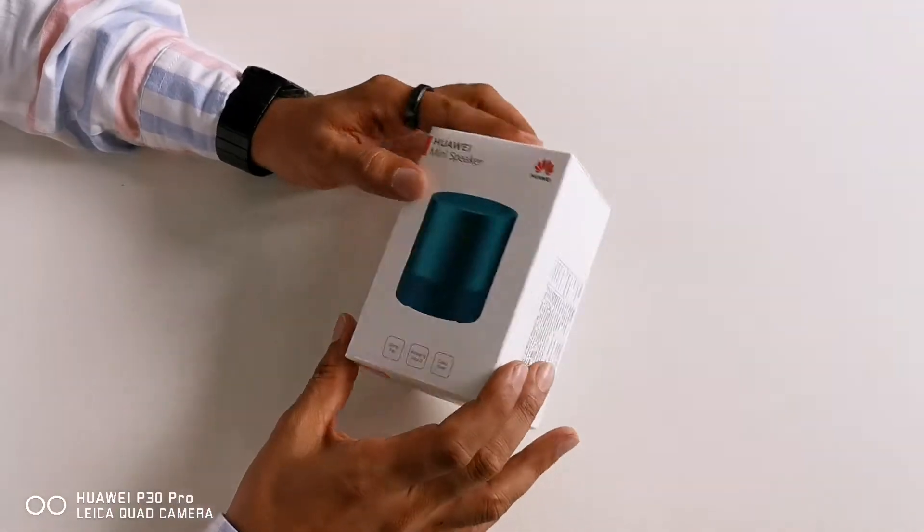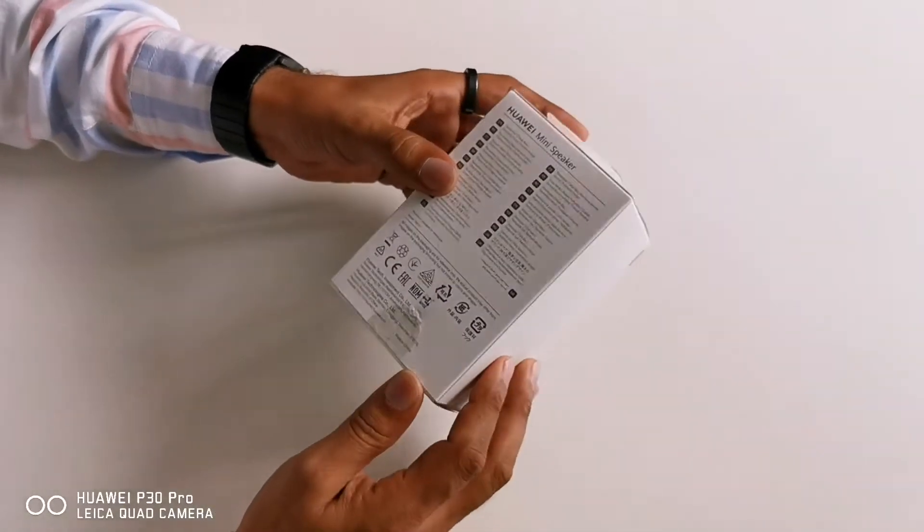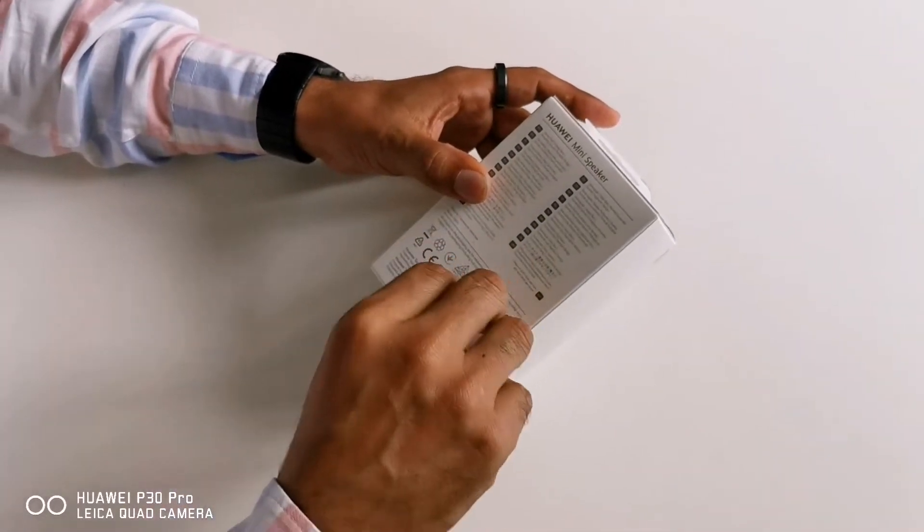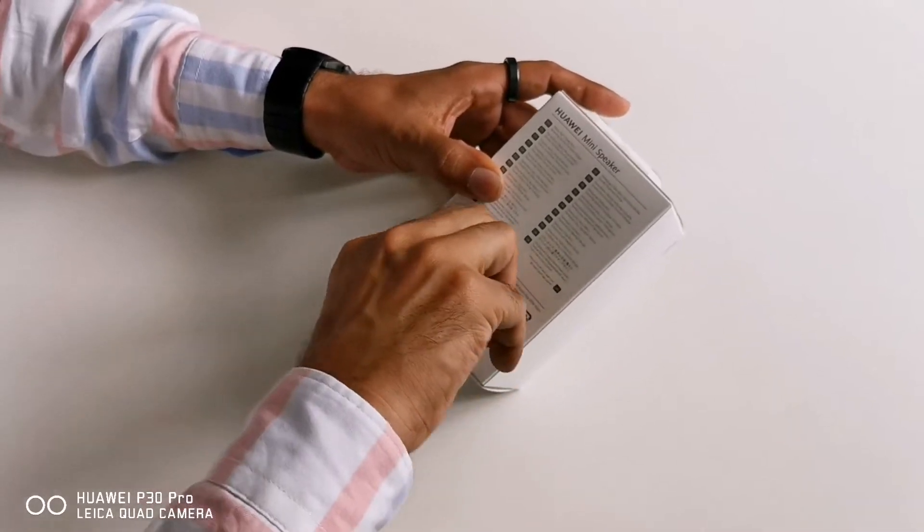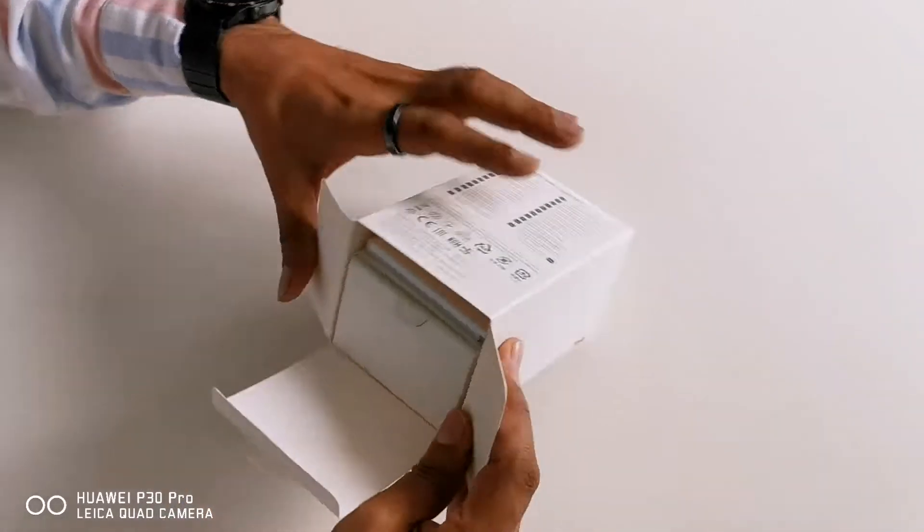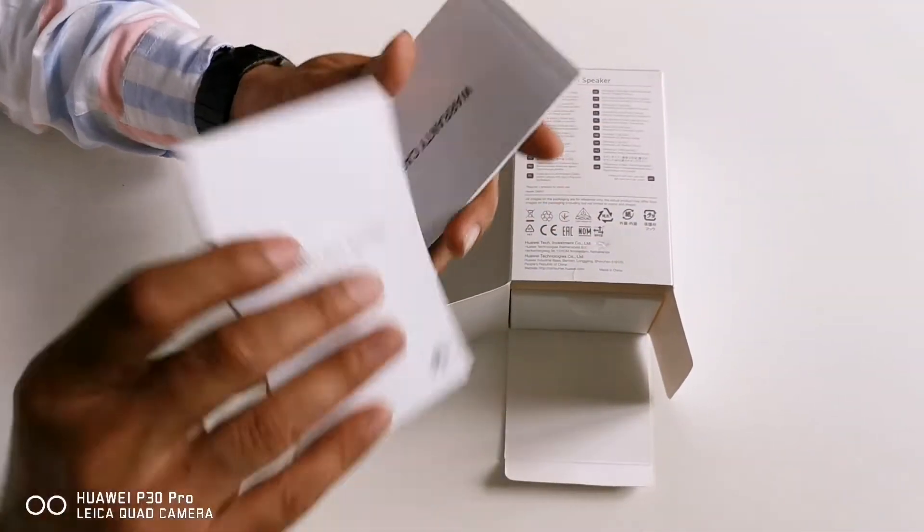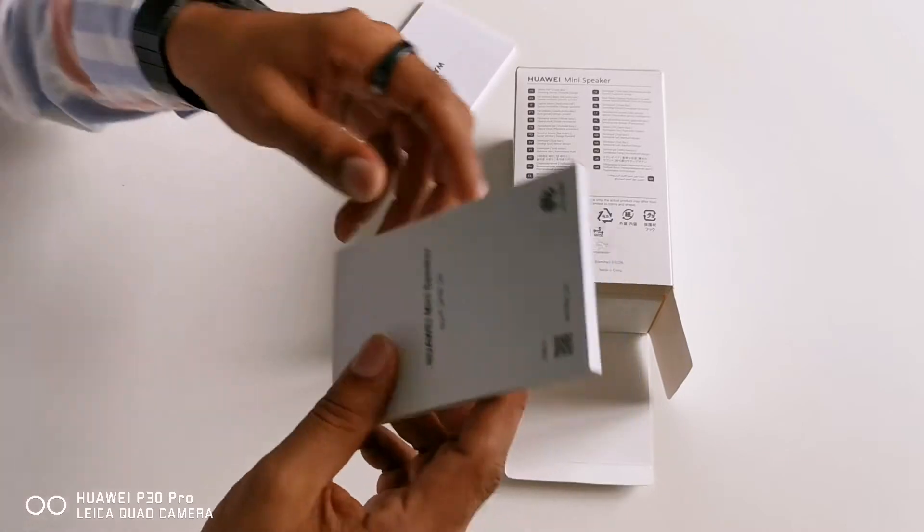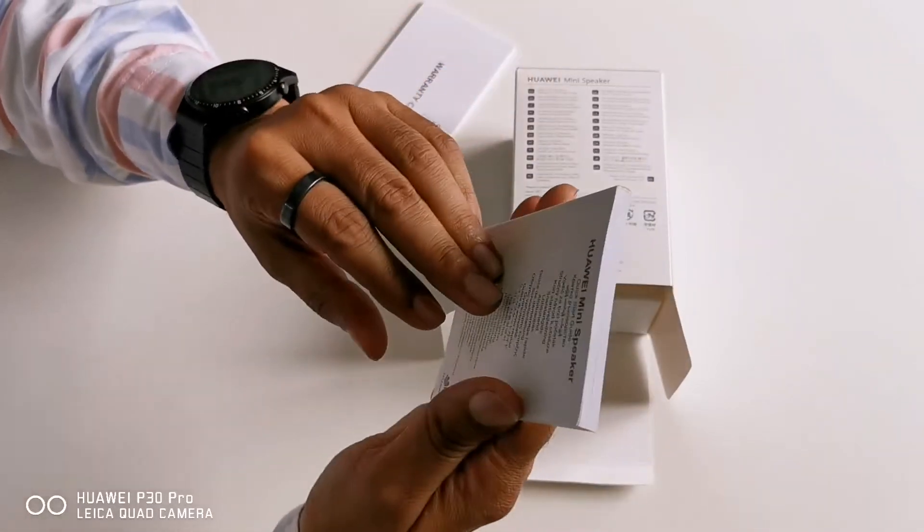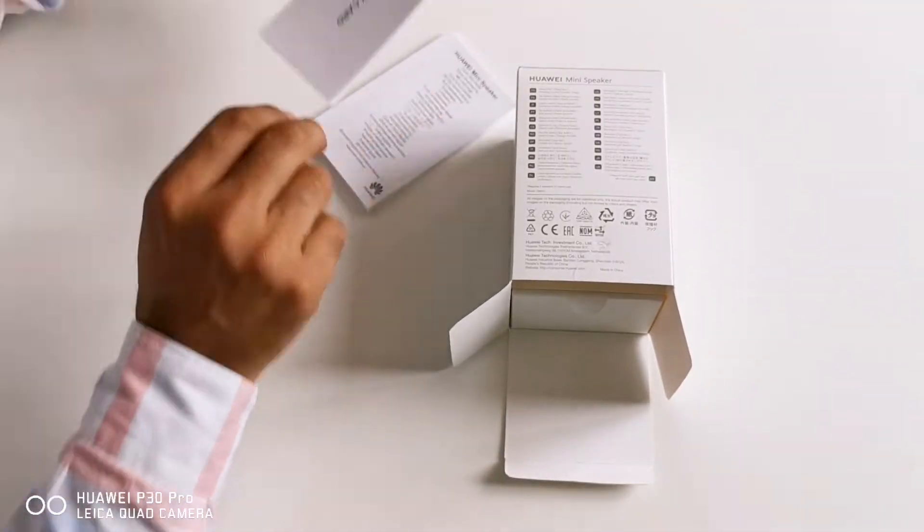Before knowing about the reasons to buy this Huawei Mini Speaker CM510, let's unbox and see what we have inside the box. Let's open the seal from the bottom side, open it and there you will find two booklets. One is for warranty card, another one is quick start guide. So you can see how to use the speakers from there.